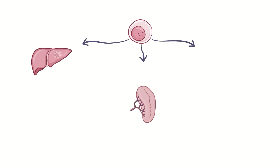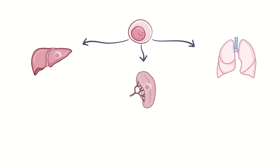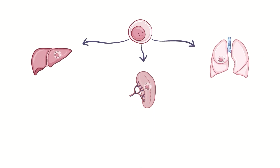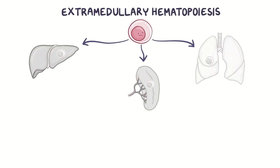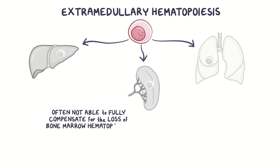In response, the hematopoietic cells migrate to the liver, spleen, and lungs, a process called extramedullary hematopoiesis. These tissues enlarge and sometimes become dysfunctional. The extramedullary hematopoiesis is often not able to fully compensate for the loss of bone marrow hematopoiesis, and it can lead to a shortage of all blood cell lines, called pancytopenia.